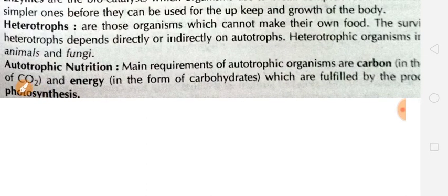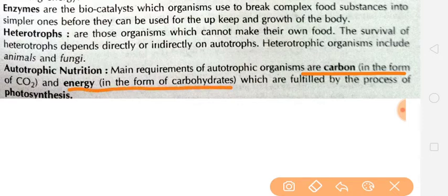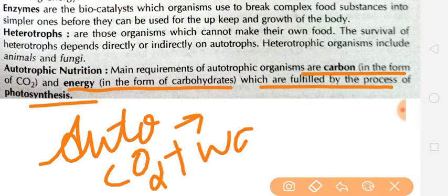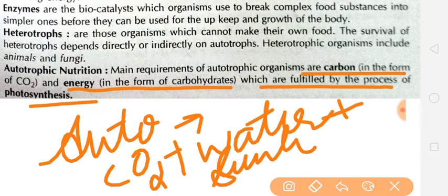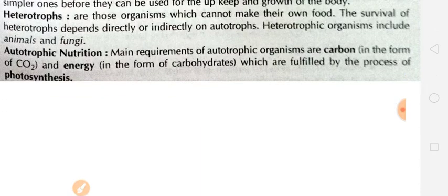Next is Autotrophic Nutrition. The main requirements of an autotrophic organism are carbon in the form of carbon dioxide, energy in the form of carbohydrates. Autotrophic nutrition is the photosynthesis process. So, in plants, carbon dioxide, water, and sunlight are taken in — water and minerals in the form of water — which is the autotrophic mode of nutrition, fulfilled by the process of photosynthesis.